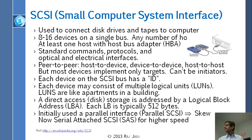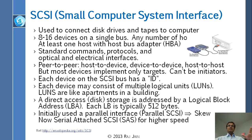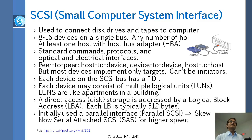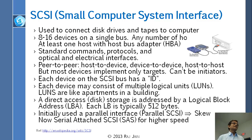SCSI was mostly parallel, and the problem with parallel interfaces is that you cannot make them run very fast. If 10 signals are running in parallel and even one is slightly slow, the bits get mixed up at the end — it is difficult to synchronize. So it is better that only one signal runs, which is serial. Most things today are serial — we use USB, which stands for Universal Serial Bus, and it goes very fast. Similarly, disk storage is all serial. There is a serial SCSI called SAS — Serial Attached SCSI — which runs at higher speed.